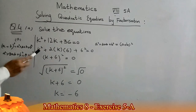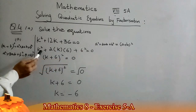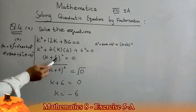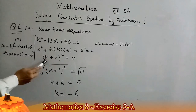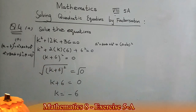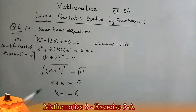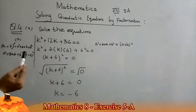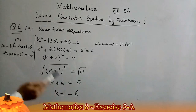So a² + b² + 2ab gives us (a + b)², which means (k + 6)² = 0. Taking the square root on both sides, the square and square root cancel, giving k + 6 = 0, so k = −6. That is the solution of the given equation.